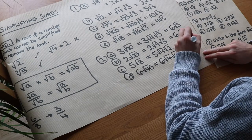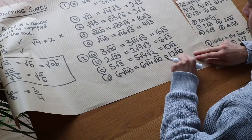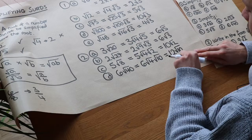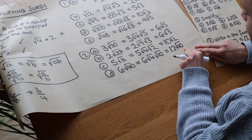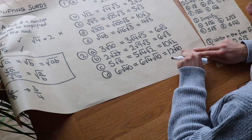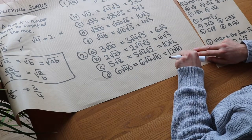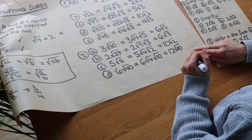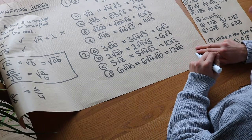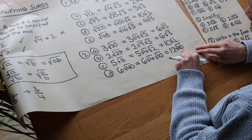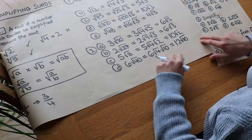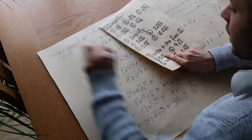You might think: can we simplify root 10 any further? It has factors like 2 and 5, but it doesn't have any square factors other than 1 — and that's not going to help us. We could write root 10 as root 2 times root 5, but that's not really any simpler. Having a single surd is simpler than having two surds, so root 10 is the simplest we can get it.